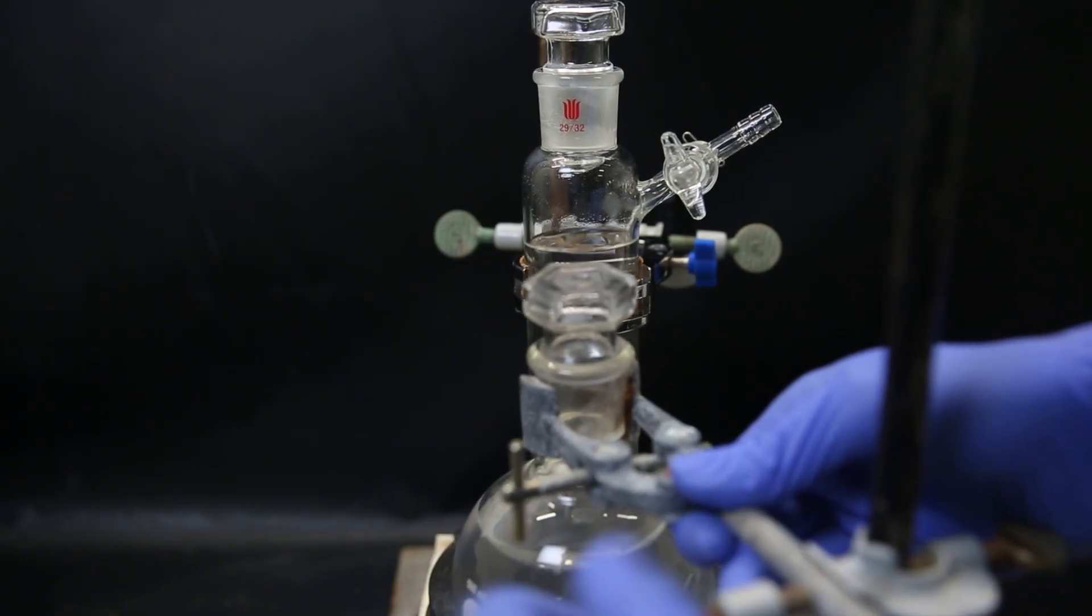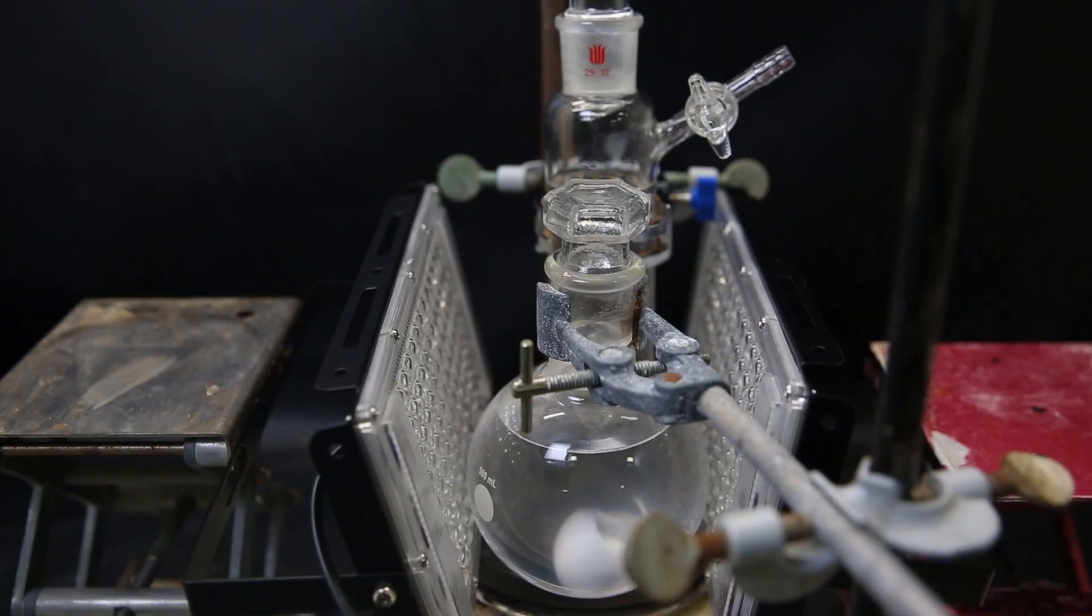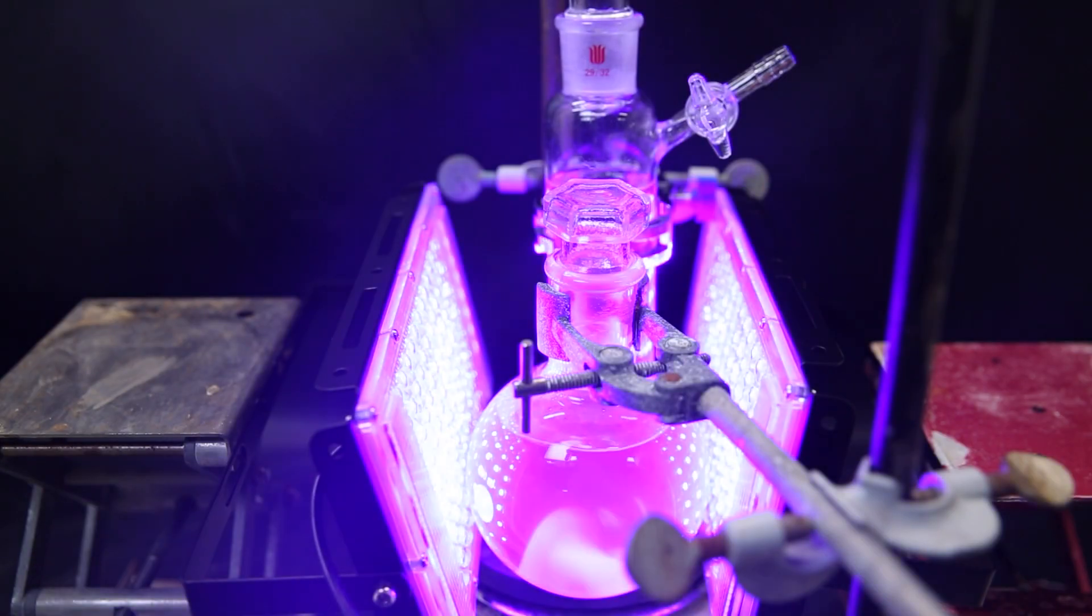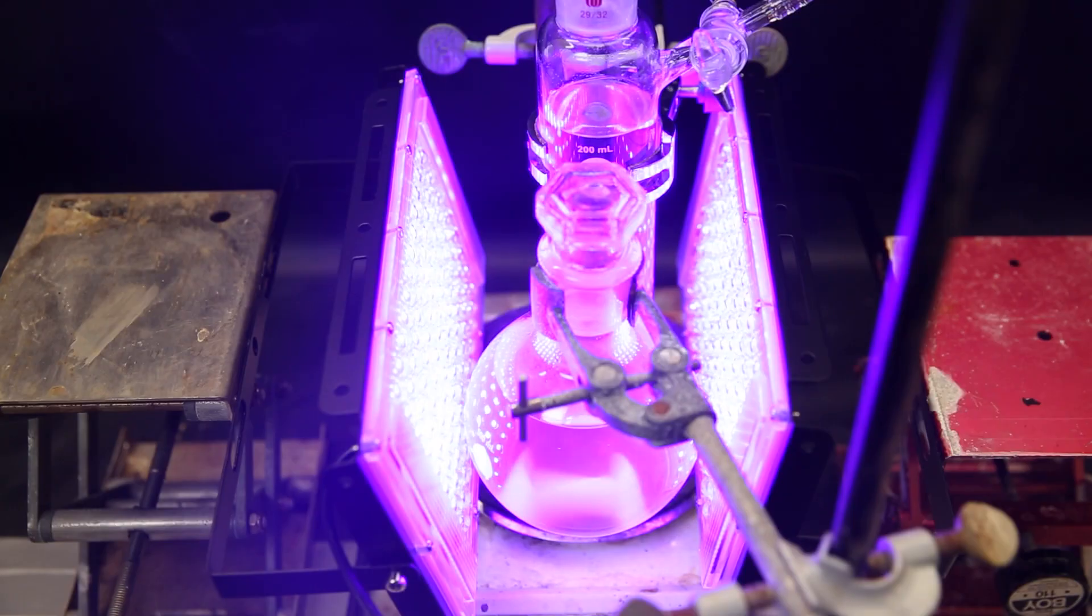I put them next to each other so that they both stir on the same stir plate. I then irradiate both flasks with two 395 nanometer UV LED lamps that have a combined power of 200 watts. Off-screen, I have a strong fan blowing to keep the temperature around room temperature. I also covered it in aluminum foil so I don't have to irradiate my eyes while I'm here, but I didn't show it. I then left it running for about 3 to 4 days.